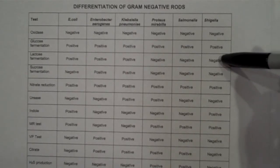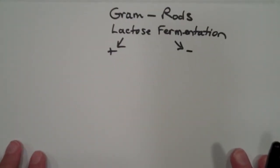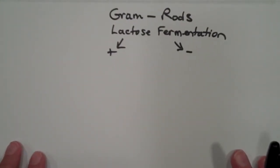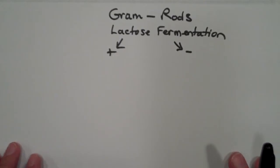So you would start your dichotomous key by putting gram-negative rods at the top — that's the bacteria we're separating. Then put lactose fermentation with positive and negative branches.